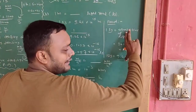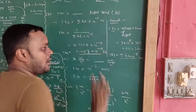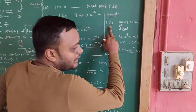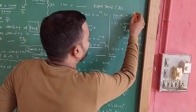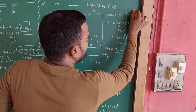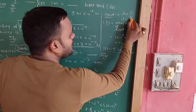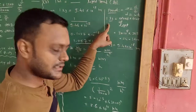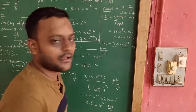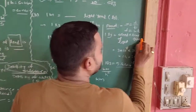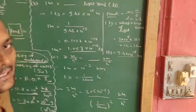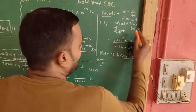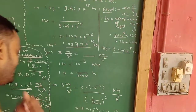Now let's prove the value of one light year. Using the formula: speed = distance upon time, so distance = speed into time. One light year means: distance = speed of light into time taken. Speed of light, which you learned in 10th standard, is 3 into 10 raise to 8 meter per second. That is the constant speed of light. Time taken is one year.